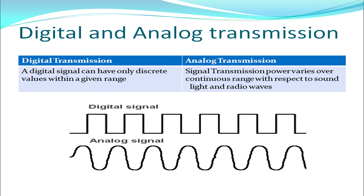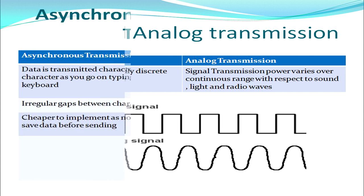A digital signal is either high or low, a 1 or a 0 — there is nothing in between. An analog signal slowly moves from 0 to 1 and vice versa.